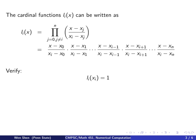We now verify the properties of the cardinal functions are satisfied by this construction. Let's first consider the value of li evaluated at xi. What would that be? So plug it in, x equals xi right here. We see we just have xi minus xj over xi minus xj. So each term in this product becomes 1, and you have n of these terms. Each one is 1, so multiply it, you get 1. So this is satisfied.